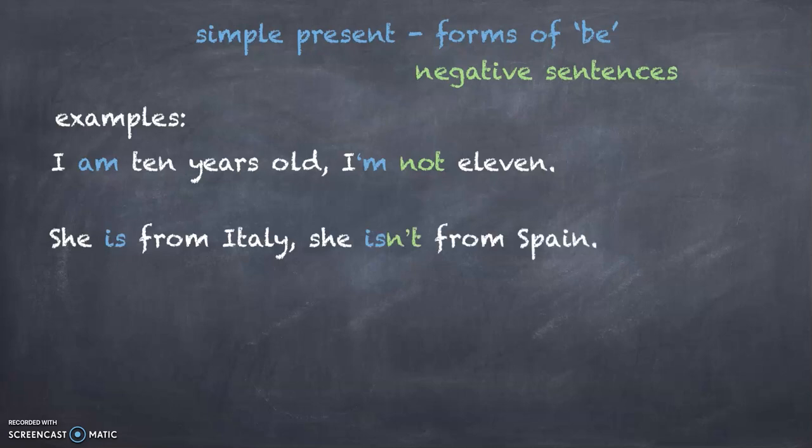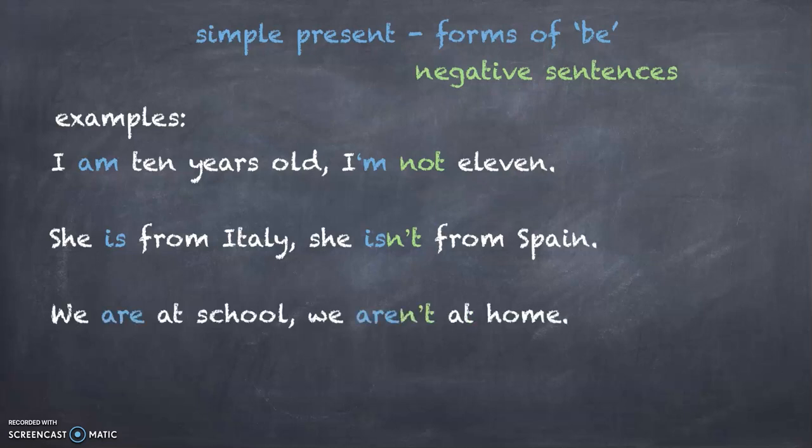She's from Italy, she isn't from Spain. When you have 'is not', the short form is 'isn't', and you have an apostrophe between the N and the T. And the last one, we are at school, we aren't at home.